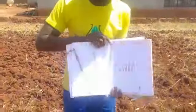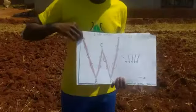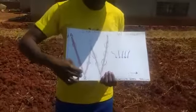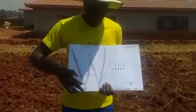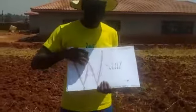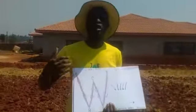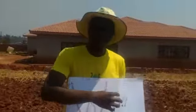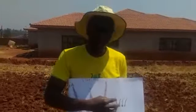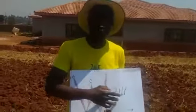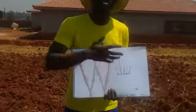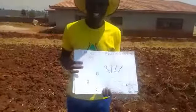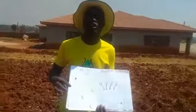The next soil sampling method is the W sampling method, whereby the farmer takes subsamples following the W pattern, with these subsamples 20 meters apart. The farmer will take these subsamples, form a composite sample, and out of this composite sample he will send 500 grams to the lab for soil testing.